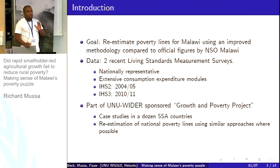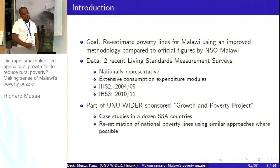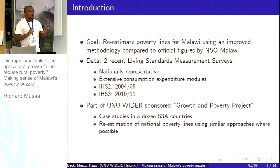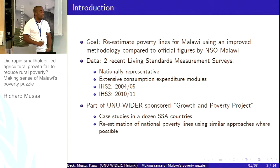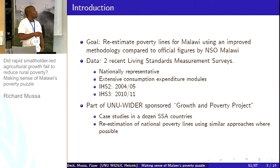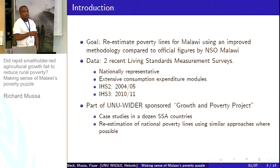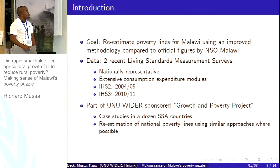The goal of this paper is to re-estimate poverty lines for Malawi using an improved methodology. We use two nationally representative datasets with very extensive consumption modules: the Integrated Household Survey 2 (IHS-2) and the Integrated Household Survey 3 (IHS-3), done every five years. This paper is part of a uni-wide Growth and Poverty Project conducted in a number of countries, with Malawi as one of the selected countries.